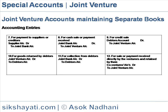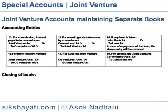For sale or payment received directly by the venturers and retained by them: Co-venturers Account Debit to Joint Venture Account. For commission or interest payable to co-venturers: Joint Venture Account Debit to Co-venturers Account. For unsold goods taken over by co-venturers: Co-venturers Account Debit to Joint Venture Account.